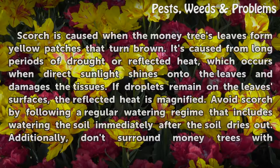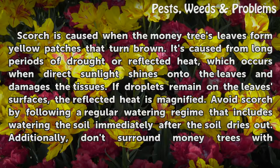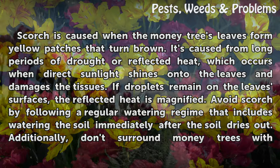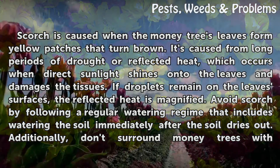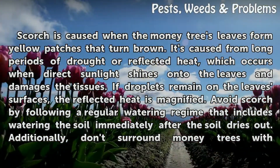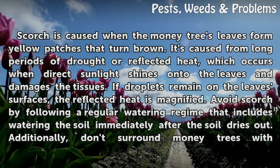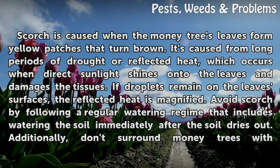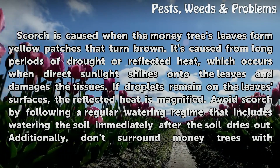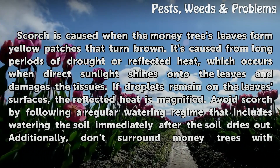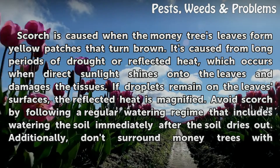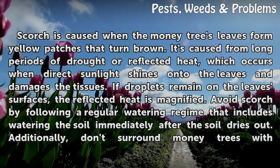Scorch is caused when the money tree's leaves form yellow patches that turn brown. It's caused from long periods of drought or reflected heat, which occurs when direct sunlight shines onto the leaves and damages the tissues. If droplets remain on the leaves' surfaces, the reflected heat is magnified.